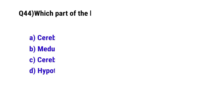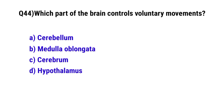Question number forty-four: Which part of the brain controls voluntary movements. The correct option is C, cerebrum.